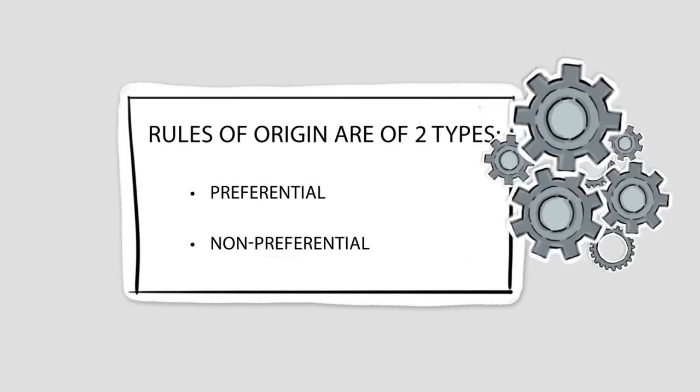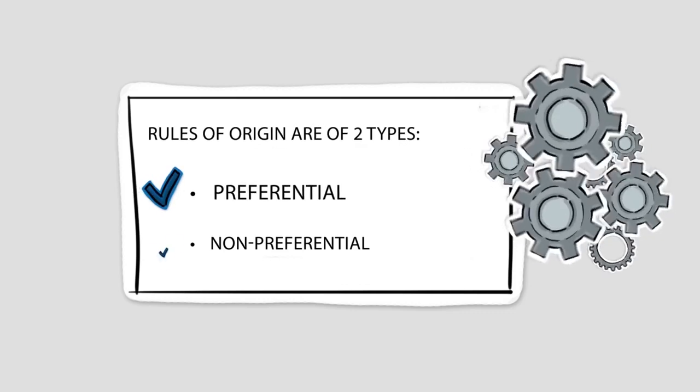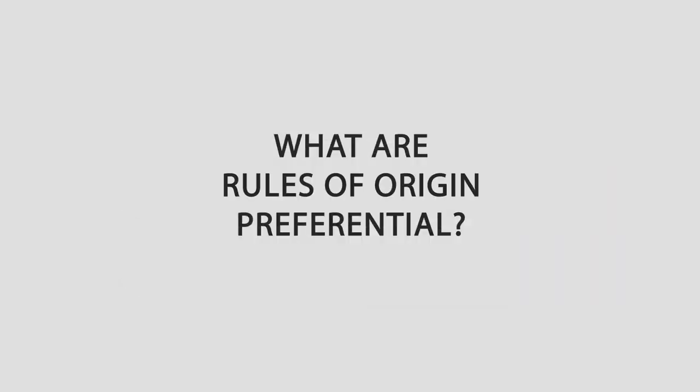Rules of origin are of two types: preferential and non-preferential. What are rules of origin preferential? Under an FTA, the tariff concessions are granted only when these prescribed rules of origin are met.